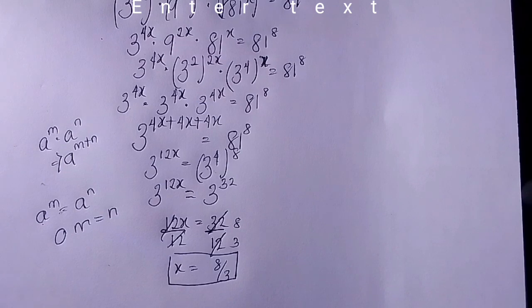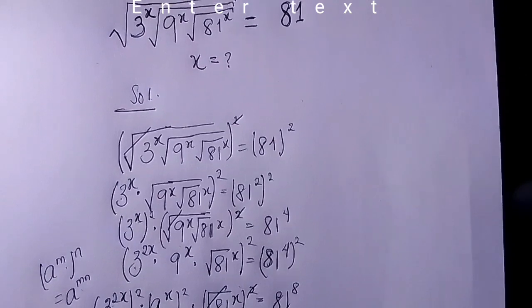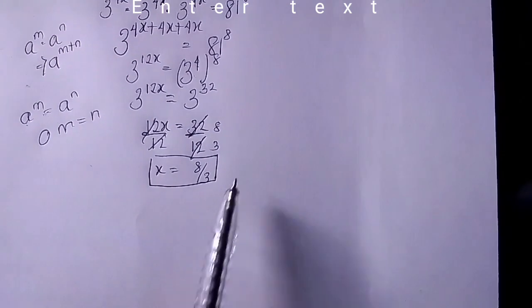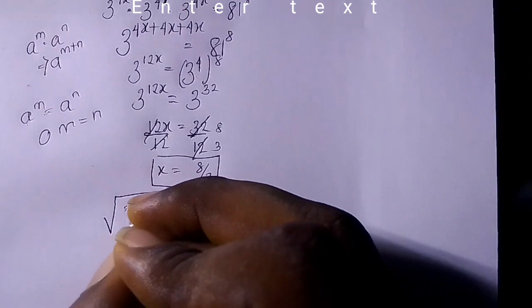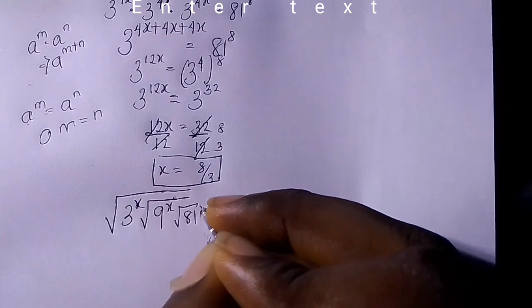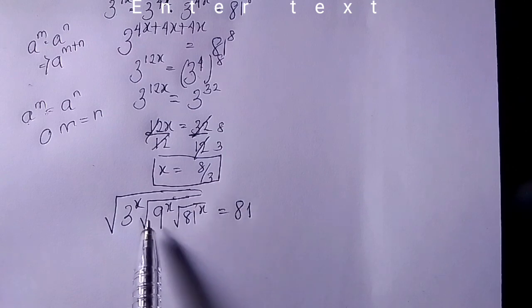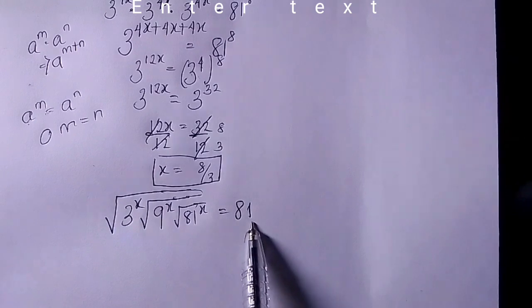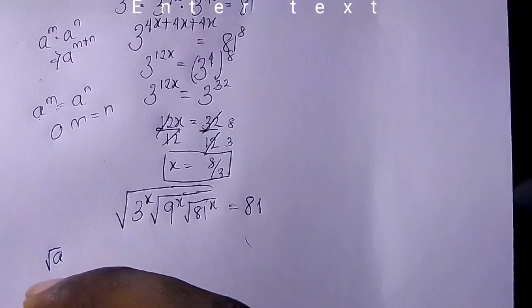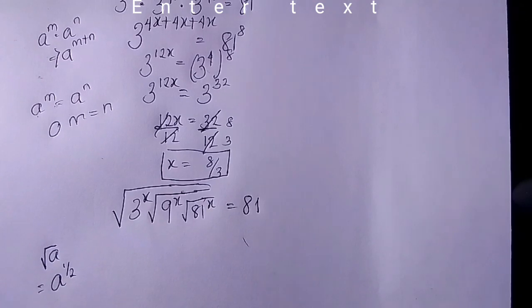Now having x = 8/3, we use the second method to verify. Using the original question: root 3 raised to the power of x, root 9 raised to the power of x, root 81 raised to the power of x equals 81. Remember that the square root of a equals a raised to the power of 1/2. So the square root changes to a power of 1/2.